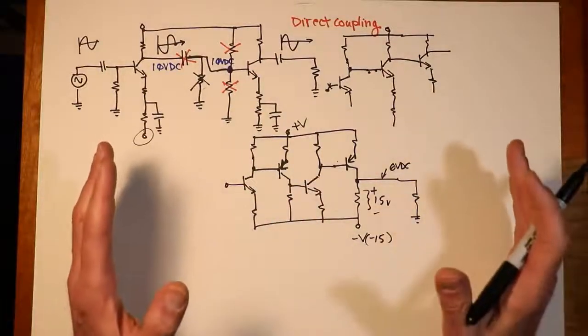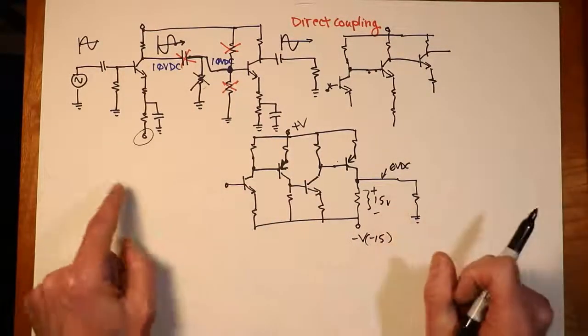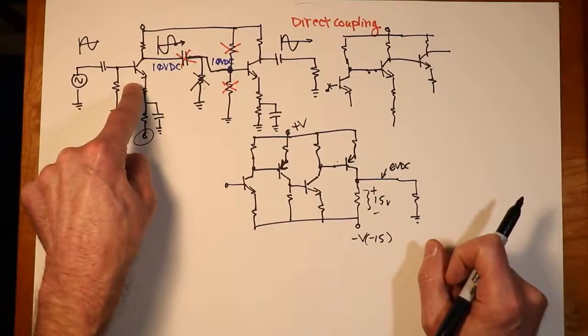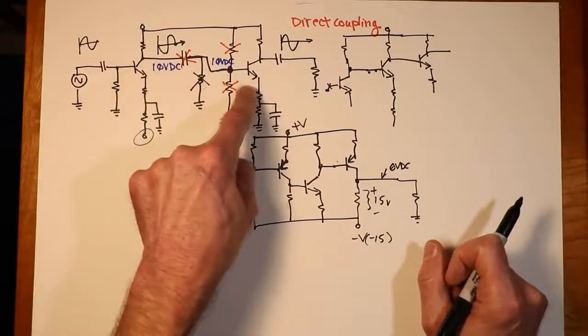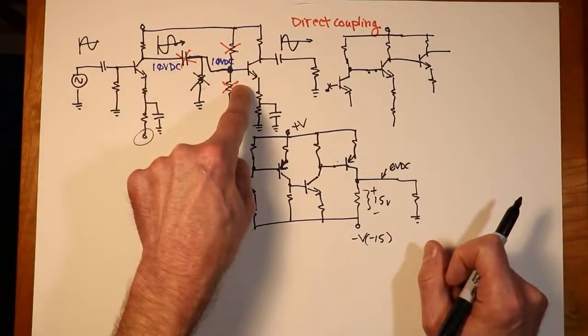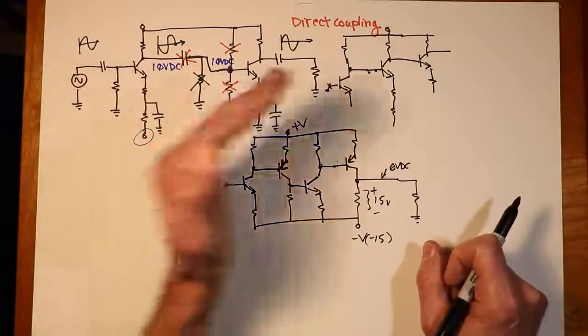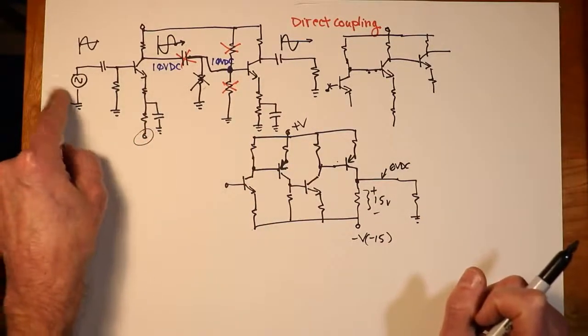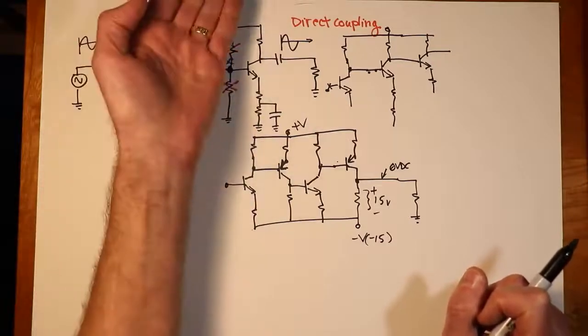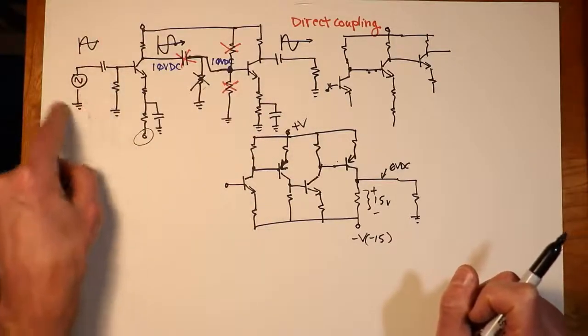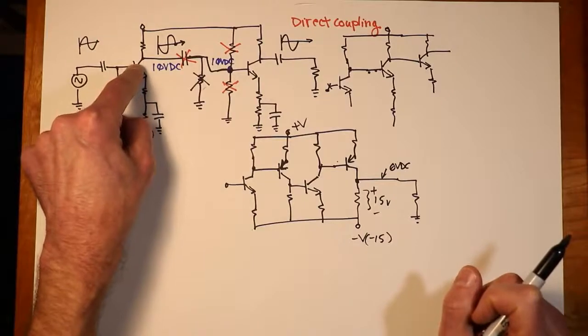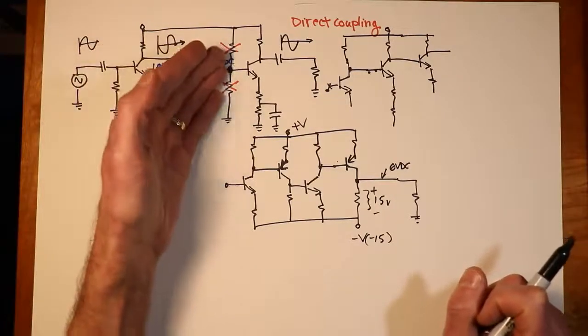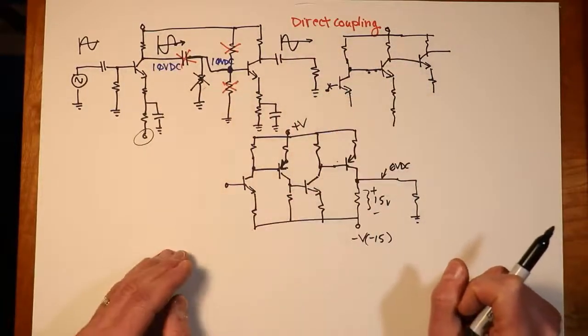The input impedance, on the other hand, is whatever the input impedance is of the first stage, because the source only drives the first stage. It doesn't directly drive the second stage. It's the first stage that drives the second stage. You could kind of think of this like a series of dominoes. You only need enough push to get the first domino to go because that's what hits the second. So the source only sees the input impedance of the first stage. It doesn't, for example, see the first stage in parallel with the second stage, in parallel with the third stage, and so forth.